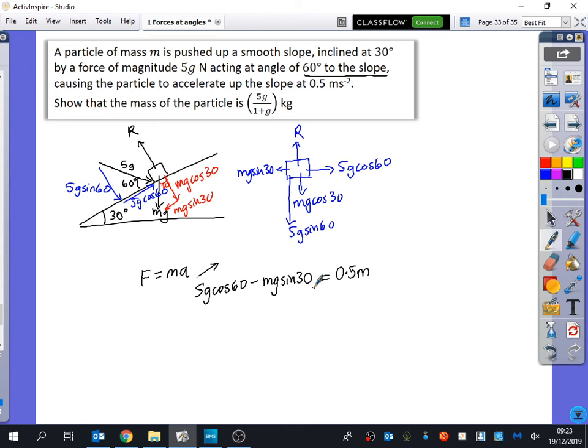Luckily, we're not getting any of the root 3 over 2s in any of this. So that's 5G times a half, 5 times a half, 2.5. MG times a half, 0.5 MG equals 0.5M. You don't want to substitute in G because of what we said earlier. G is in the answer. They don't seem to have any decimals in there, so I probably would double everything. So I get 5G minus MG equals M.